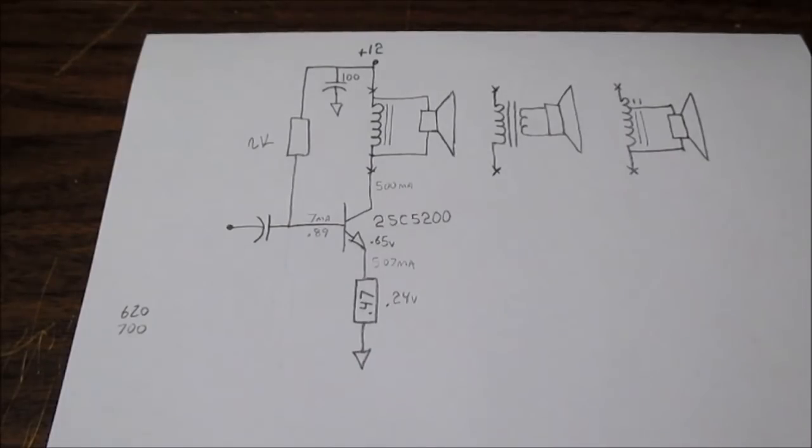Welcome back to The Bench everyone. Today's video is the continuation of the audio output topology series where I talk about different types of output stages. Still pretty early in the series here, still on the single driven element type class A amplifiers. And in the future I will move on to more complex type output stages, push-pull stages and things like that.